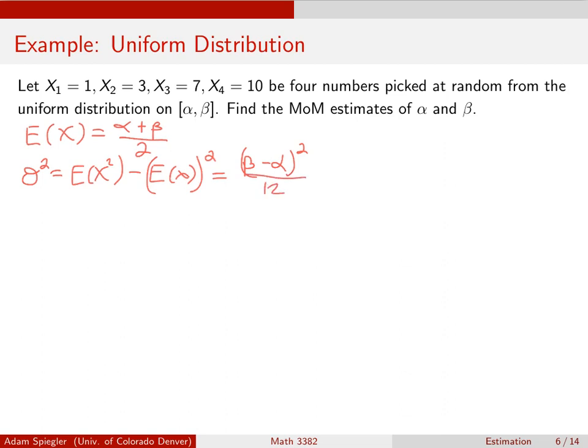So the second moment is actually E(X²). So if we want to find the second moment, that's going to equal E(X²), which we can get by taking the variance, which is beta minus alpha squared over 12.